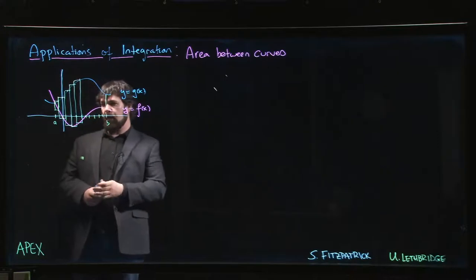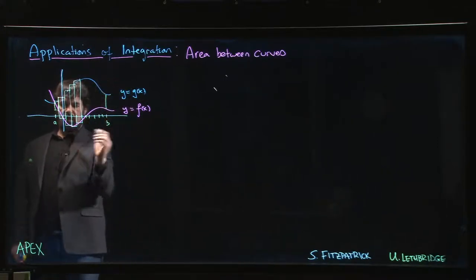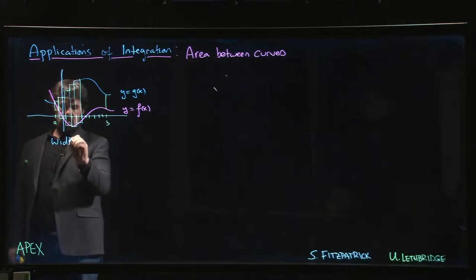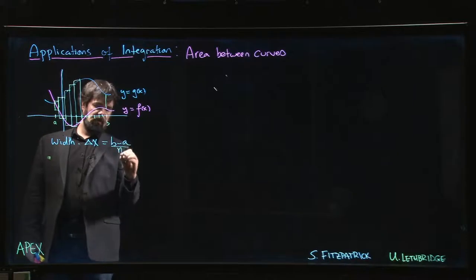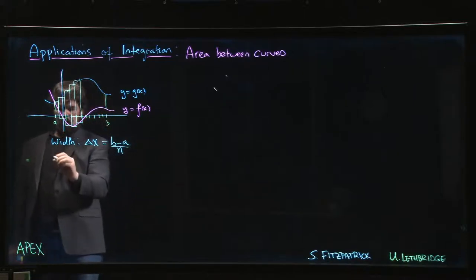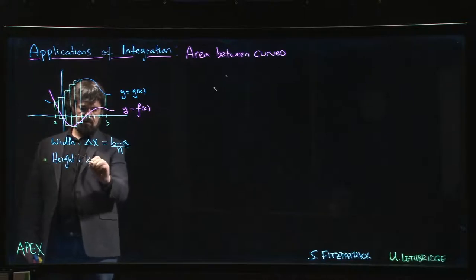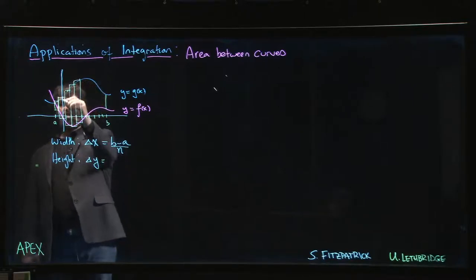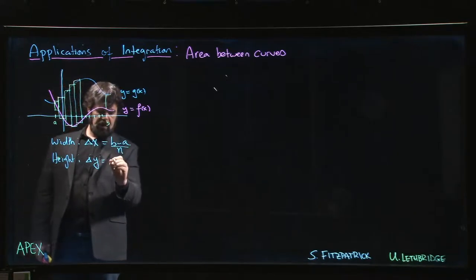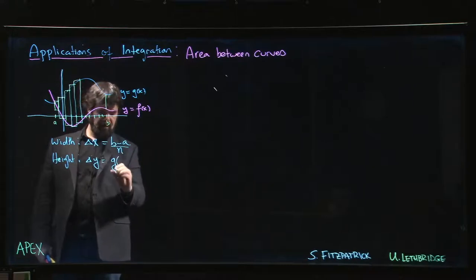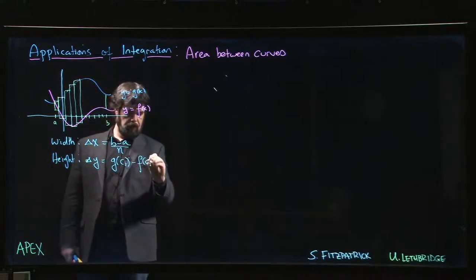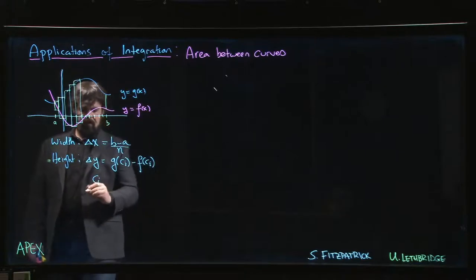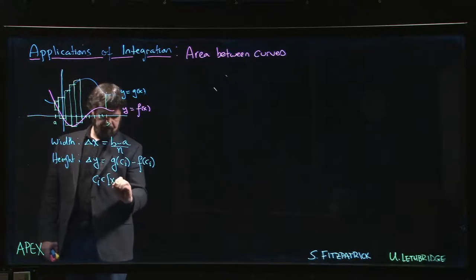We can think about this for a second. For each of these rectangles, the width is just going to be, as usual, your delta x - it's b minus a over n, just like it was for Riemann sums. The height of each rectangle is going to be, well think of it like delta y - it's the change in y going from the bottom rectangle to the top rectangle. So it's going to be the value of g at some point ci minus the value of f at some point ci.